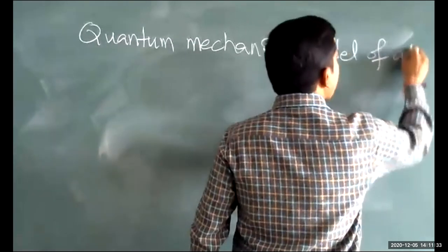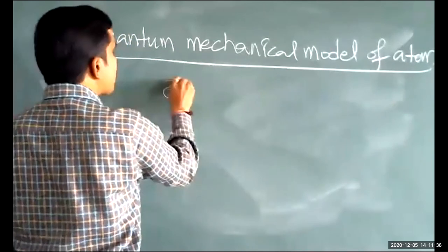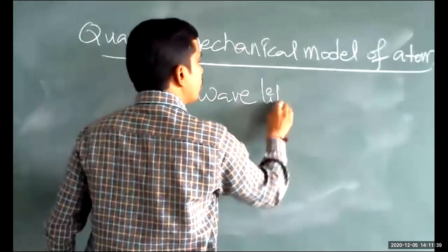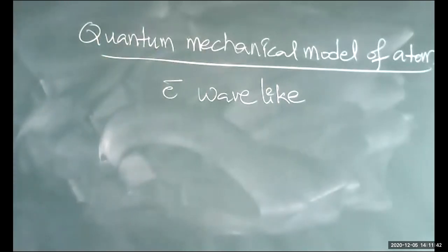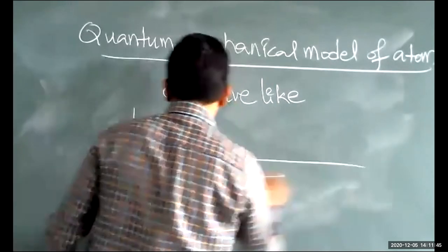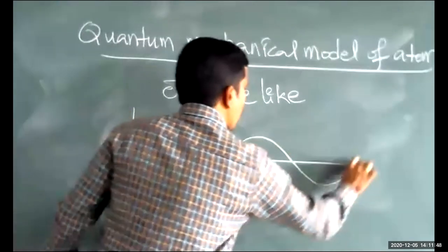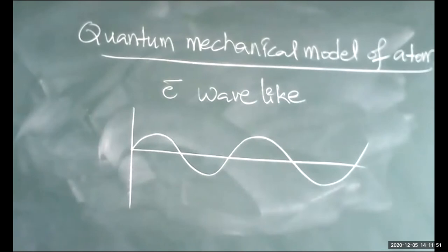According to the quantum mechanical model of atom, electrons are considered as wave-like and have wave-like properties. This is a simple representation of a wave.